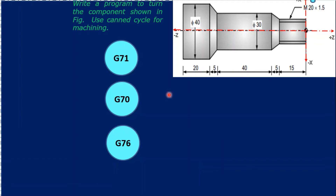Hello friends, today we'll see how to use the G70, G71, and G76 canned cycles to produce this component. The G71 is a multiple turning cycle, also called the stock removal cycle. G70 is the finishing cycle and G76 is the threading cycle. G70 and G76 are compulsory here because the problem clearly mentions to write the program to turn the component as shown in the figure using the canned cycle.